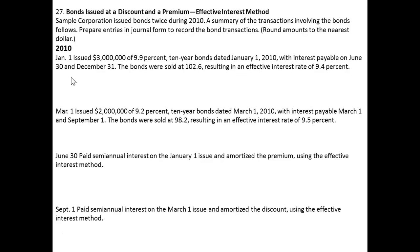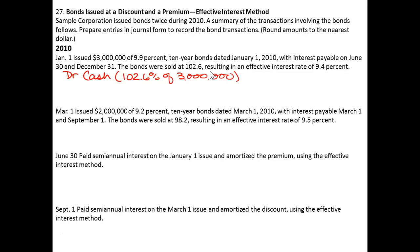we issued a $3 million bond at 9.9%, 10 years, and we sold it at 102, so we received cash of 102% of $3 million, meaning we received cash of $3,078,000. We need to credit bonds payable for the future value, or what we're going to repay, which is $3 million.